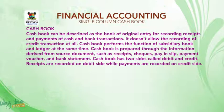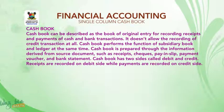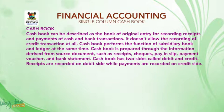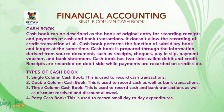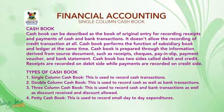Cashbook has two sides called debit and credit. Receipts are recorded on the debit side while payments are recorded on the credit side. Types of cashbook: 1. Single-column cashbook — this is used to record cash transactions.